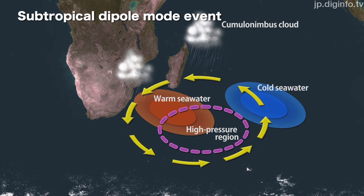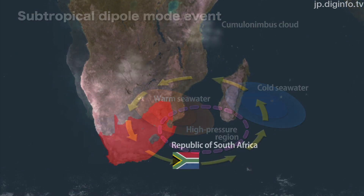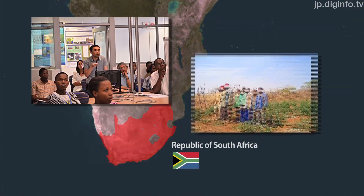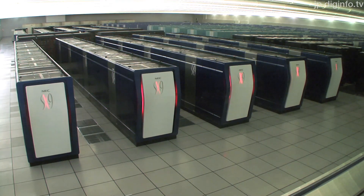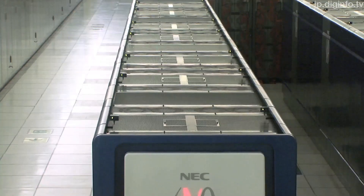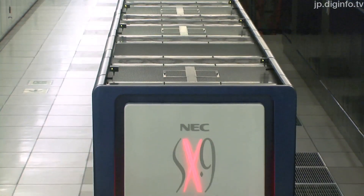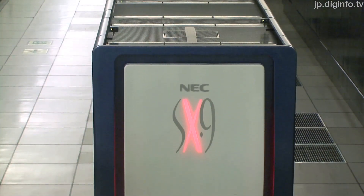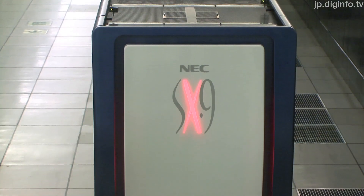To find out how such long-term variations happen, researchers need detailed field data and the Earth Simulator, which uses a supercomputer to analyze and predict variations.